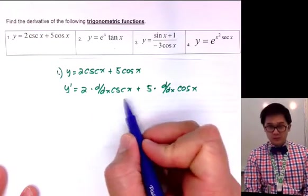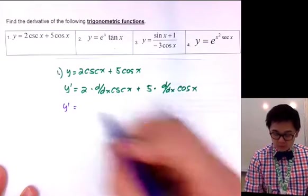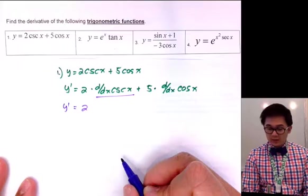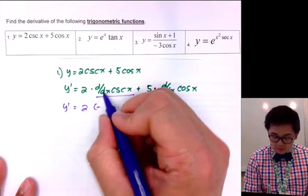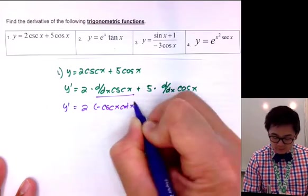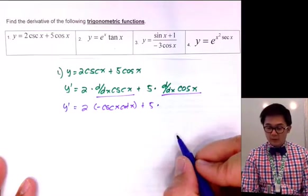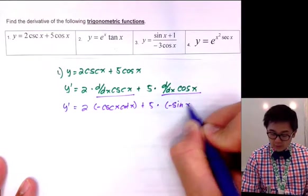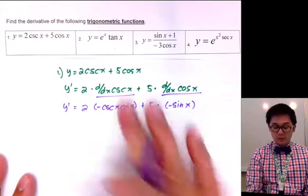y prime is equal to 2 times the derivative of cosecant x, which is simply negative cosecant x cotangent x, plus 5 times the derivative of cosine x, which we know is negative sine x. You need to know your formulas for the derivatives of the trig functions so you can easily solve derivatives like this.